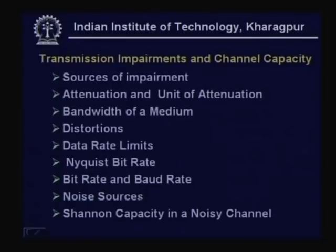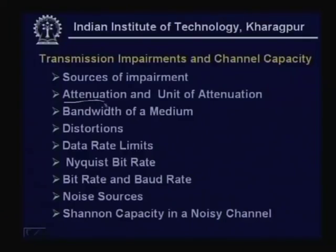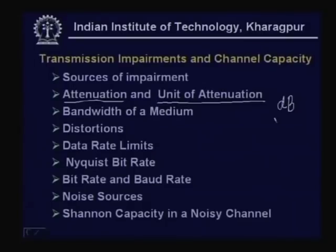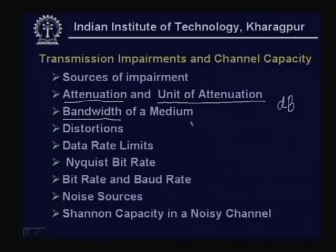Then comes the impairments that take place as the signal passes through the transmission media. The signal suffers some impairment in the form of attenuation. We shall see how attenuation occurs and the unit of attenuation — decibel or dB — which is universally used. We shall discuss the attenuation of different types of media and also the bandwidth of a medium and the types of signals which can be sent through it.